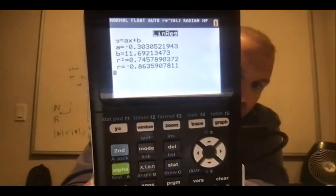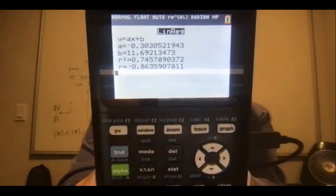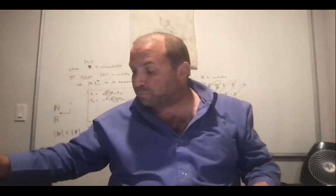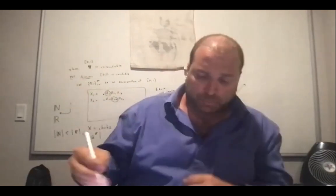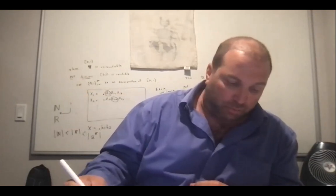You should now have an R value of approximately negative 0.8635. What does the negative sign tell you? It's a negative slope. Also copy down your A value of approximately negative 0.303 and your B value of approximately 11.692, giving you the equation Y = Ax + B.